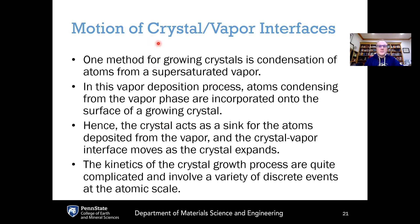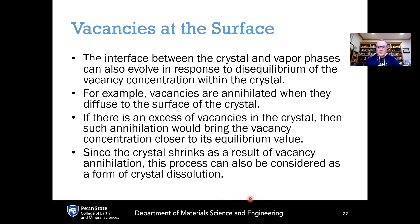Now let's consider the problem of crystal-vapor interfaces. One method for growing crystals is condensation of atoms from a supersaturated vapor, which is done in physical vapor deposition. You create the supersaturated vapor and the atoms get deposited onto a substrate where the crystal grows. In this vapor deposition process, the atoms condensing from the vapor phase are incorporated onto the surface of the growing crystal. The crystal acts as a sink for the atoms deposited from the vapor, and the crystal-vapor interface is moving as the crystal expands. The kinetics of the crystal growth process are quite complicated and involve a variety of discrete events at the atomic scale.